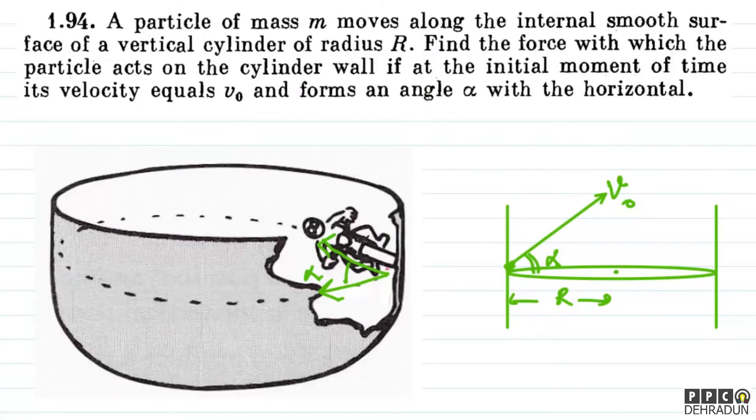So, bachon, let me explain this diagram. As you can see, the particle moves along the internal surface of the vertical cylinder, and its velocity forms an angle alpha with the horizontal.